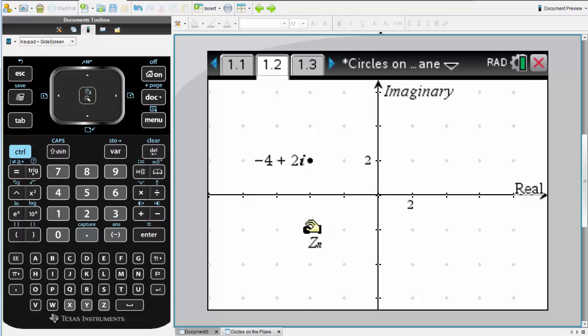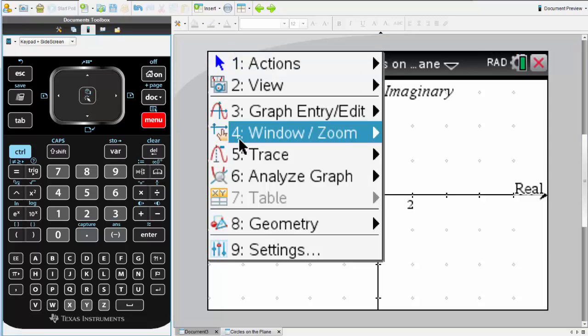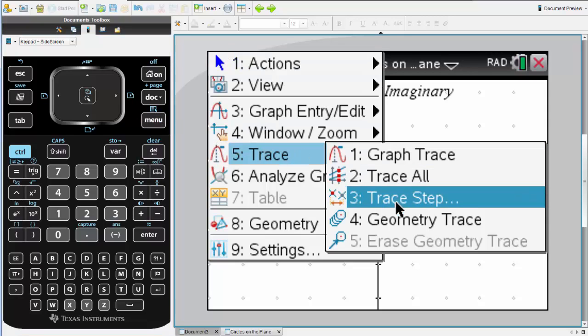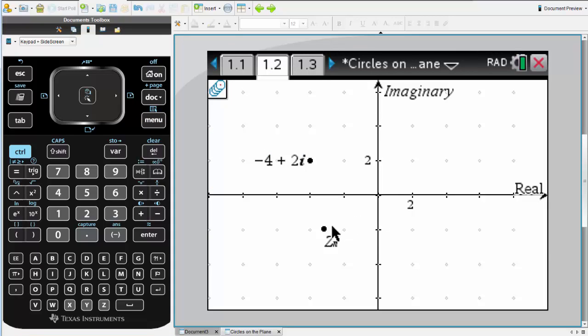As we move z around, a fixed distance of 4 units away from this point here, minus 4 plus 2i. We can trace the location of z to get a better idea on how those points are situated in relation to minus 4 plus 2i. We see we get a circle.